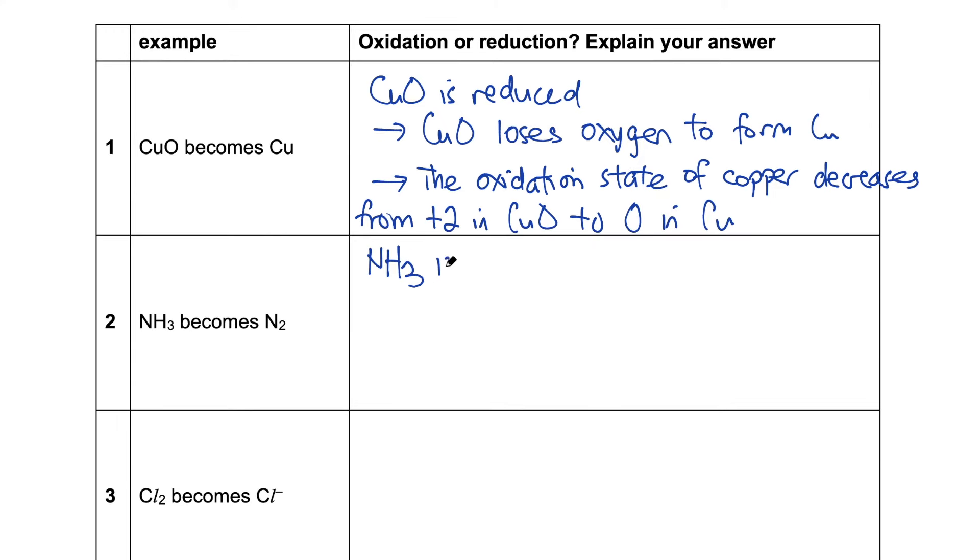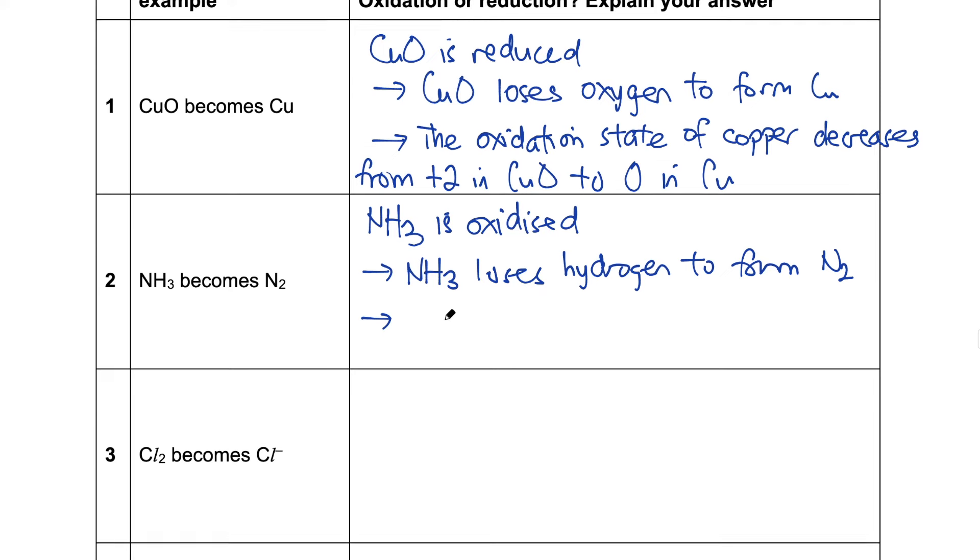For the second one, NH3 is oxidized. We can use hydrogen in this case. NH3 loses hydrogen. Loss of hydrogen is oxidation. We can also use oxidation state. The oxidation state of nitrogen increases from minus three in ammonia to zero in nitrogen.